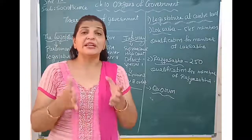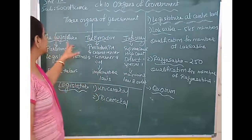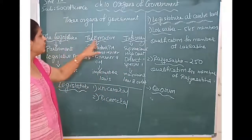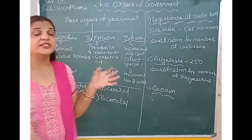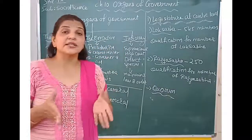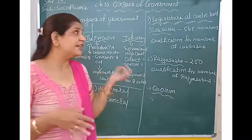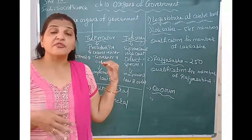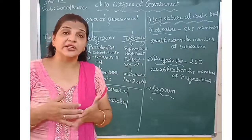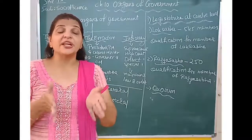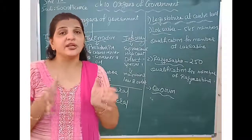Mainly there are three organs of government. The main three organs are the Legislative, Executive, and Judicial. These three are the organs, and for smooth administration it is necessary that these three organs of government jointly work together efficiently so the government can do their work smoothly.